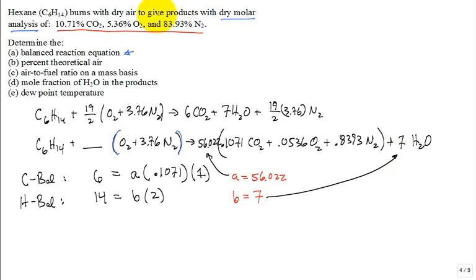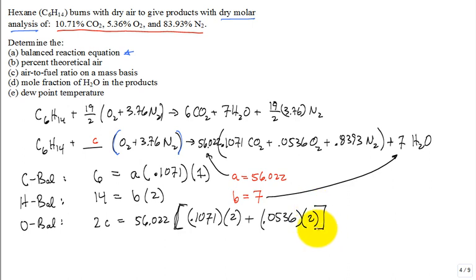Let's do the next balance. Which one? Oxygen balance. So I don't know C, lowercase C, okay? Not C like carbon, uppercase C, but just the letter C that's unknown. I need to solve for C. So on the left-hand side, it's 2C is equal to, then you're going to have 56.022 times, and put a big parenthesis right here, 0.1071 times 2 plus 0.0536 times 2, close parenthesis, plus 7 times 1. We can solve for C, 12.5. So now we come up here, and we put in 12.5.